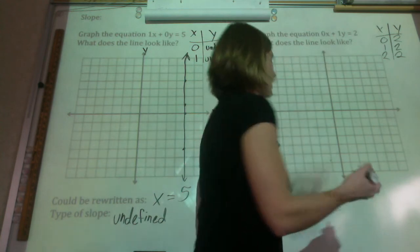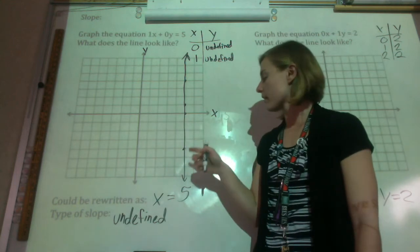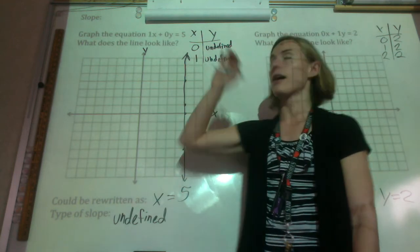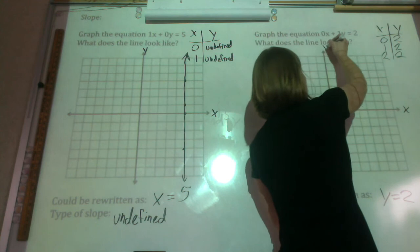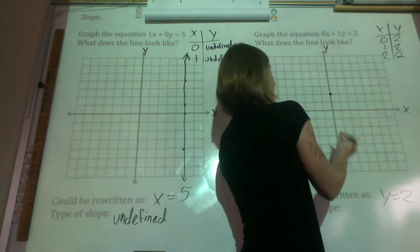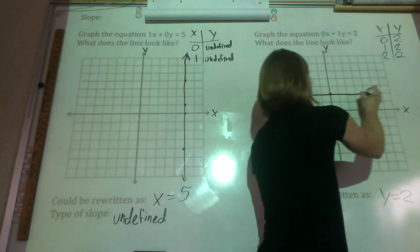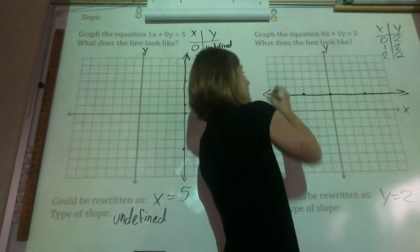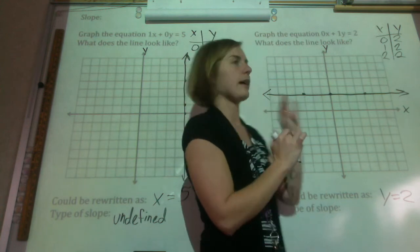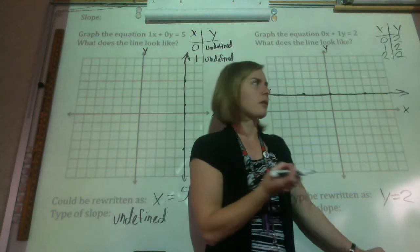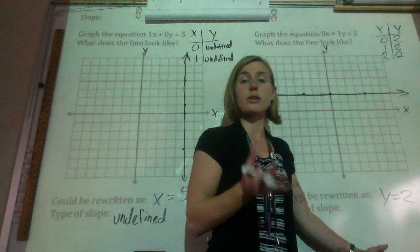And the reason is that is we can rewrite this equation as taking away x, and this just is y equals 2. So kind of similar to this one over here, where we graph all the places where x equals 5, we need to graph all the places where y equals 2. Remember, this is the x-axis, this is the y. So y equals 2 right here, and right here, and right here. So all the places that y equals 2 is all along right here. And we put arrows at the end because it goes on forever both ways. Now, if I were on this line, what kind of slope would it seem to have? Well, it's just flat. So if you're walking along the flat ground, what kind of slope is there? There is no slope, it's 0.